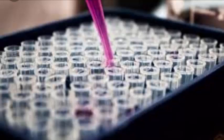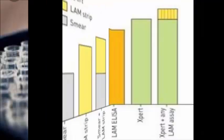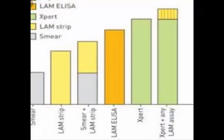The ELISA test uses urine in patients with tuberculosis, also called TB, and HIV co-infection. It can also be used in induced sputum to diagnose sputum smear-negative patients with suspected tuberculosis. LAM was measured in induced sputum samples.